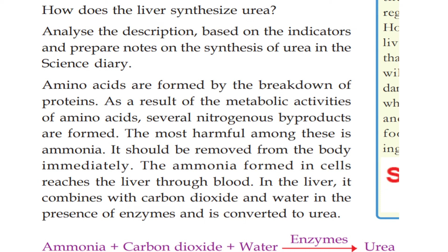How does the liver synthesize urea? Amino acids are formed by the breakdown of proteins. As a result of protein breakdown, nitrogenous byproducts are formed. The most harmful among these is ammonia.